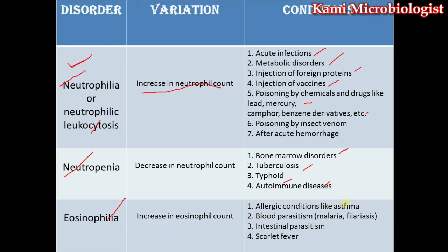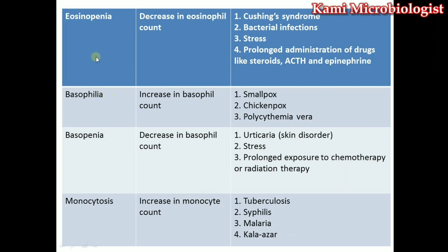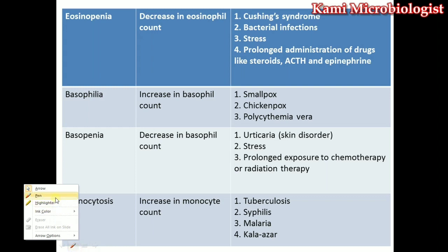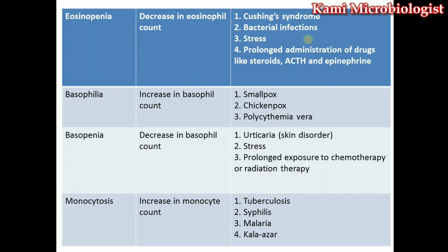High eosinophil count is called eosinophilia, occurring in Cushing's syndrome, blood parasite infections, asthma, blood parasitism like malaria or filariasis, and scarlet fever. Decreased eosinophils is called eosinopenia, occurring in Cushing's syndrome, bacterial infection, stress, and prolonged administration of drugs like steroids, ACTH, or epinephrine.